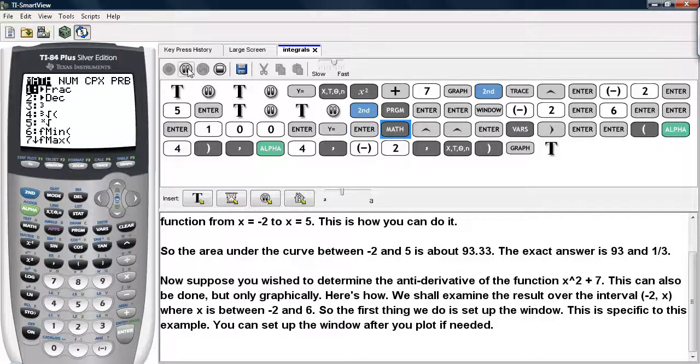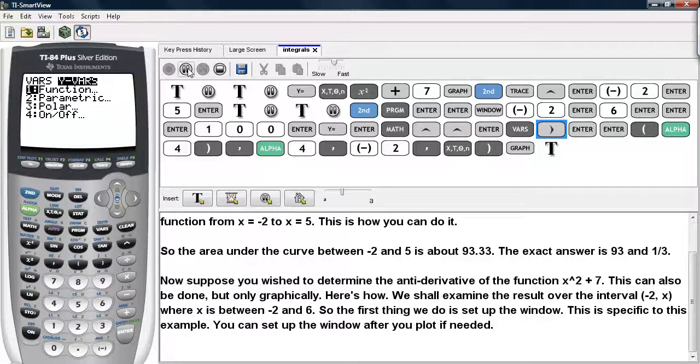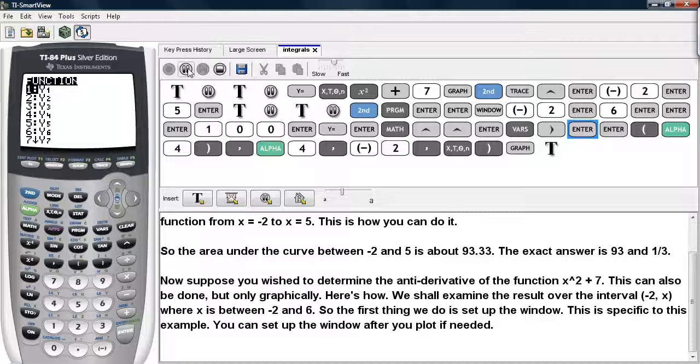and I scroll down to the second slot, and I hit math. I select the fnint option under the math menu. I wanted to find the area under the graph I've entered into y1, so I hit vars, scroll over to y vars, and select y1.